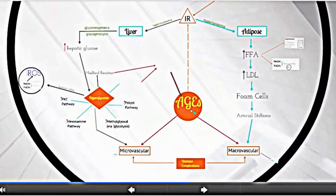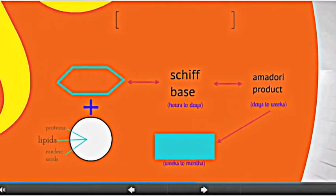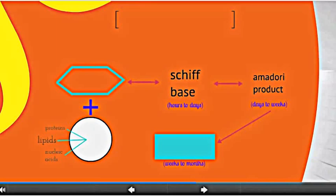The increased oxidation of glucose and lipids also increases the formation of advanced glycation end products through a variety of mechanisms. First, AGEs, or glycotoxins, are modification of proteins and lipids that become glycated and oxidized through a non-enzymatic reaction with reducing sugars.